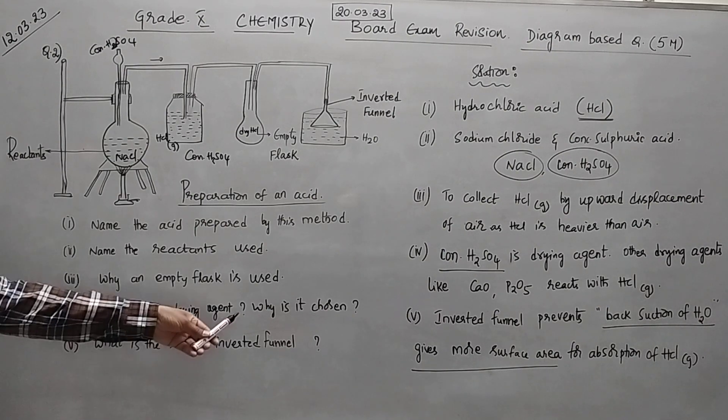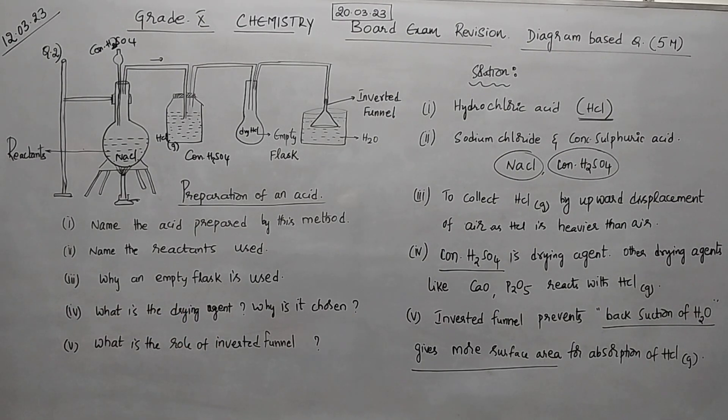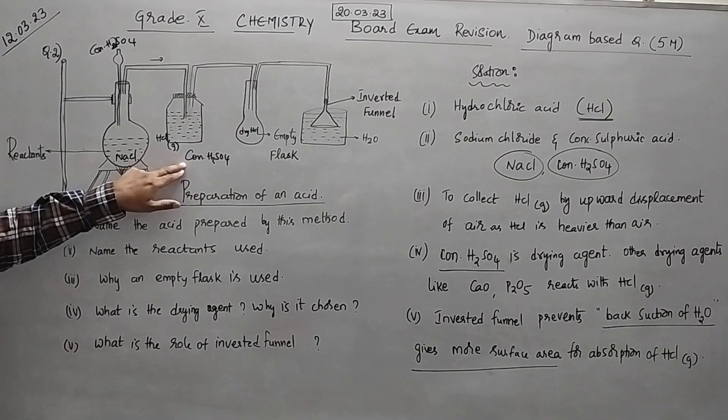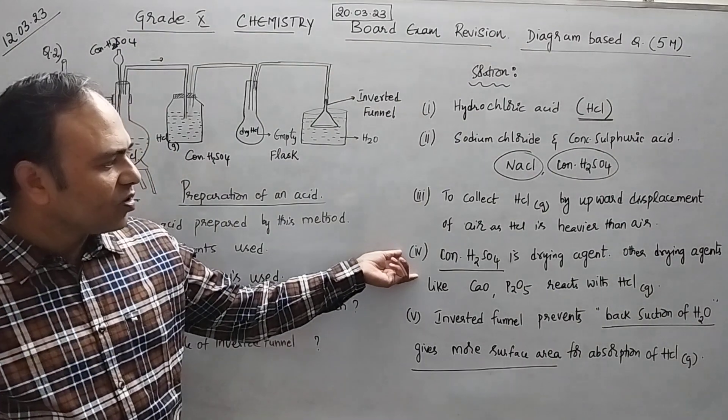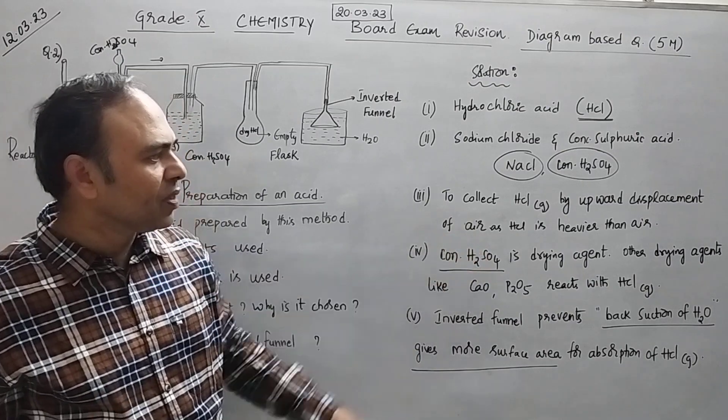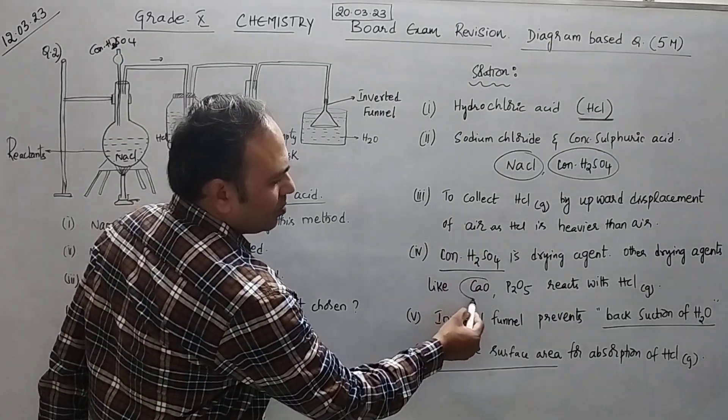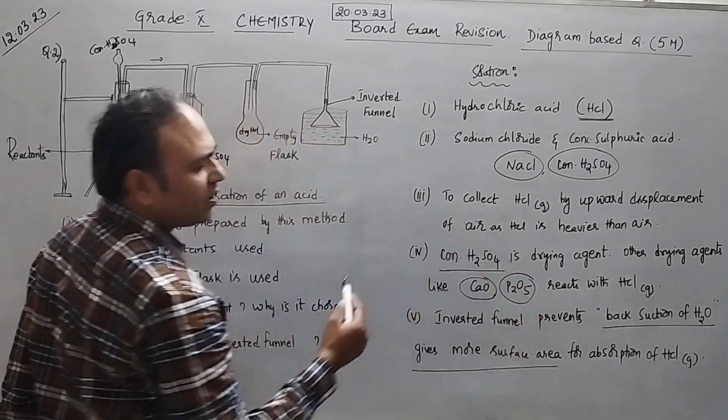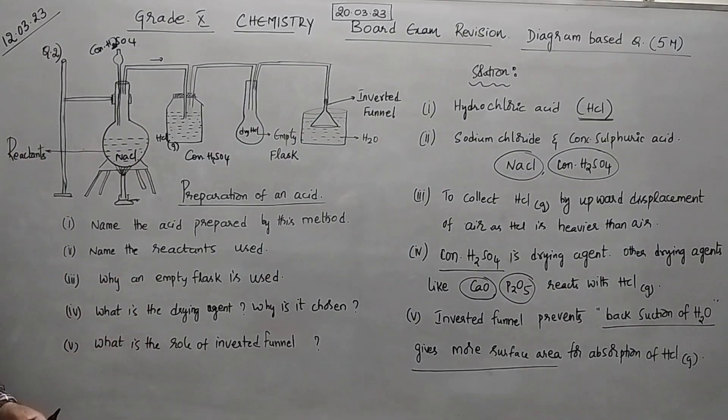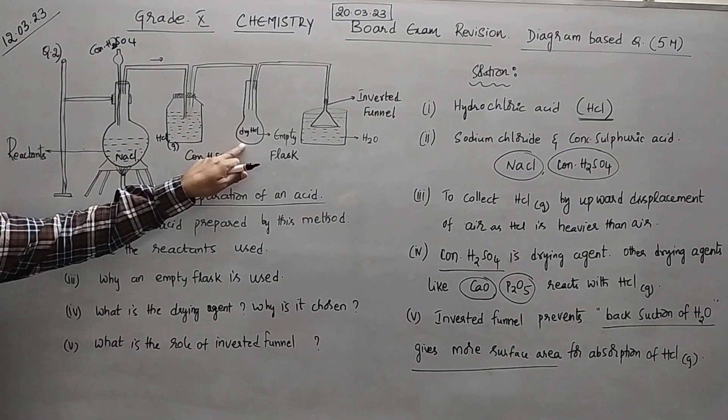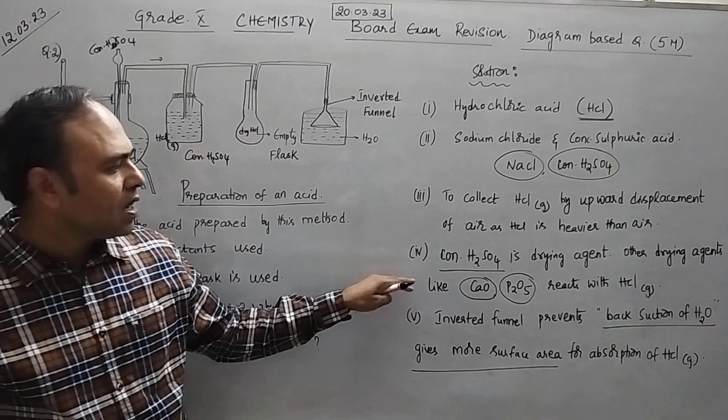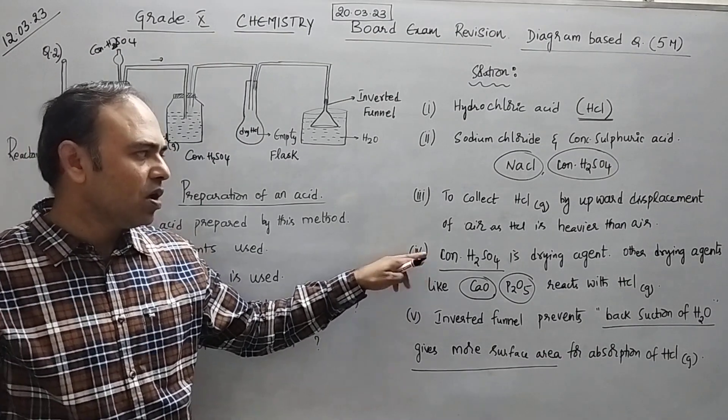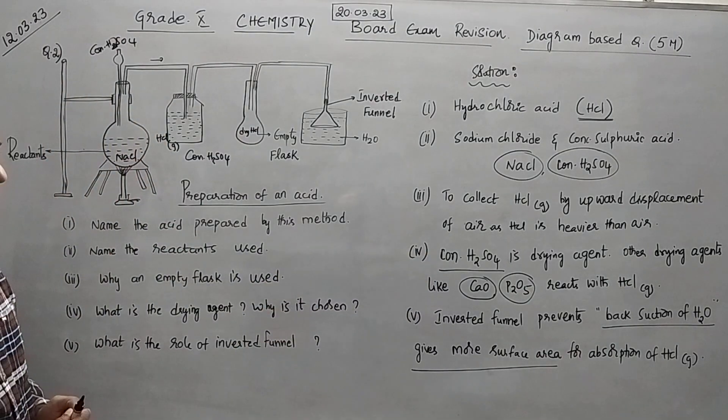Now fourth one. What is the drying agent used and why you are choosing only concentrated H2SO4 here? We can answer like this. Concentrated H2SO4 is the drying agent what you are using. If you use calcium oxide or phosphorus pentoxide as drying agent that will react with HCl. So to avoid the reaction you are using only concentrated H2SO4 which will not react with HCl.